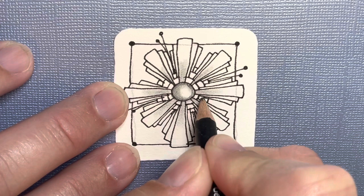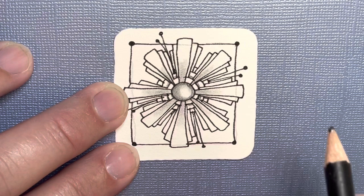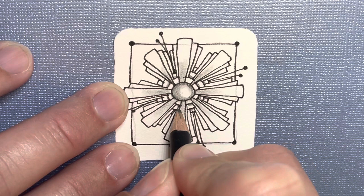And then each of these circles, it looks like this circle is laying over the next one and over the next one. So I'm just going to put a tiny, tiny bit of graphite on the outside edge of each of those circles.